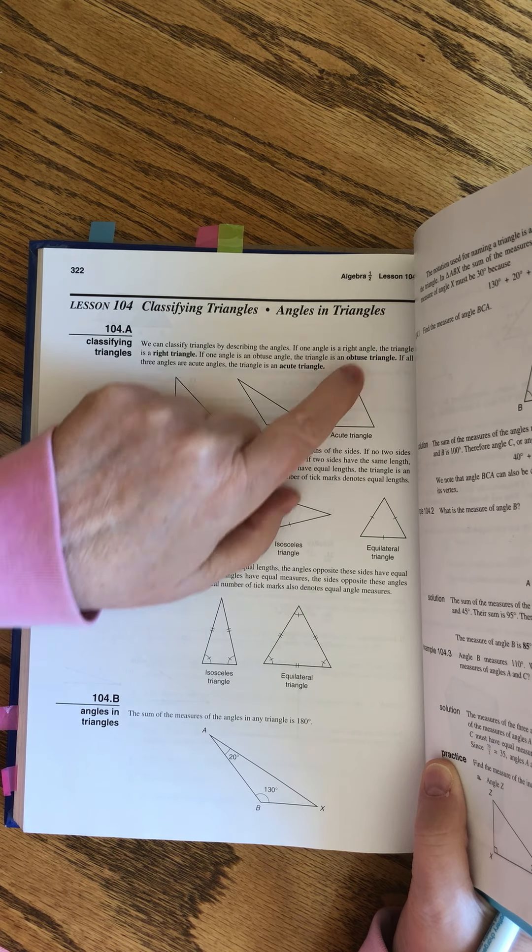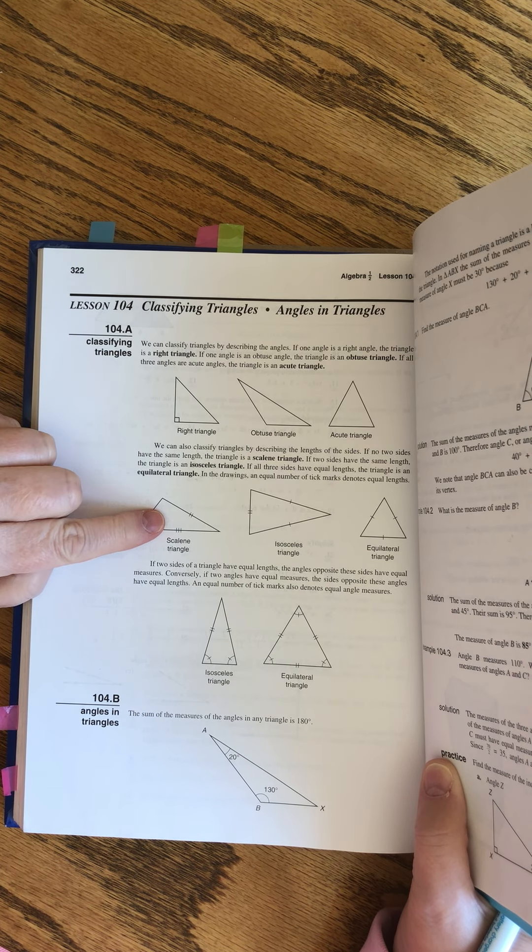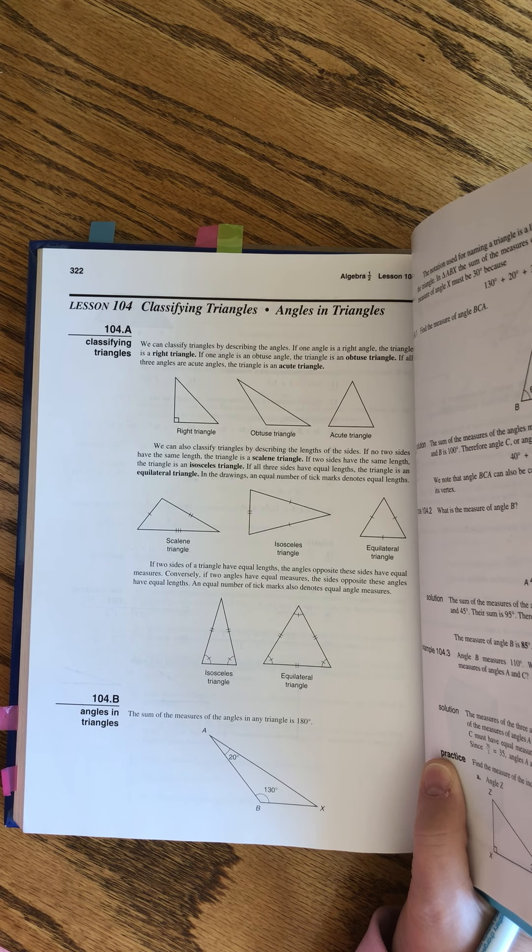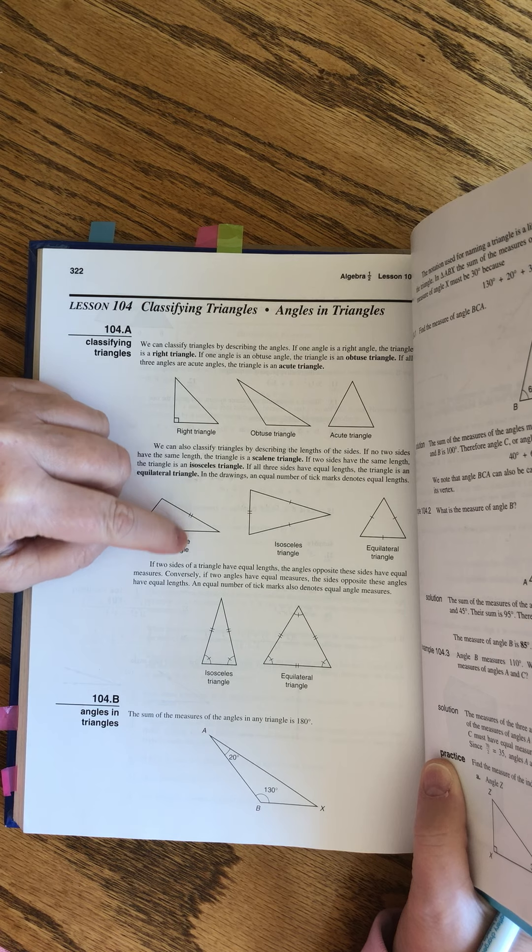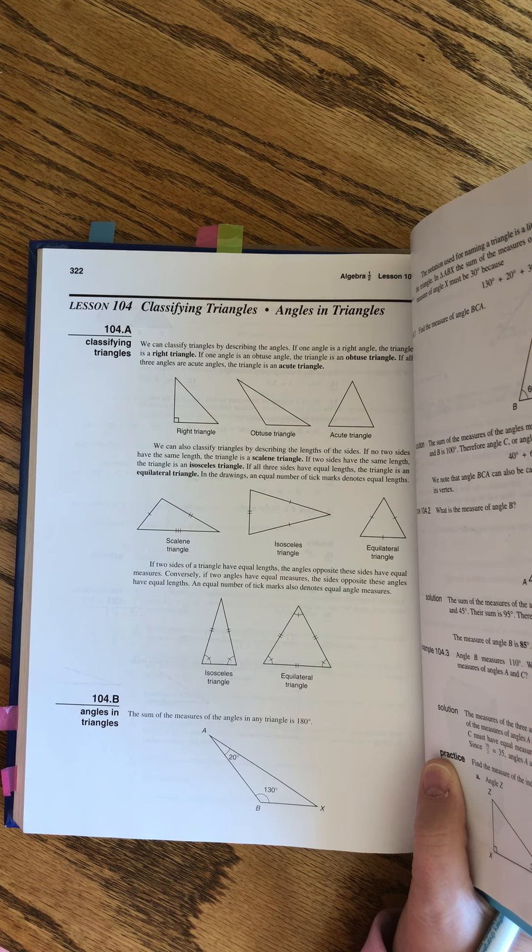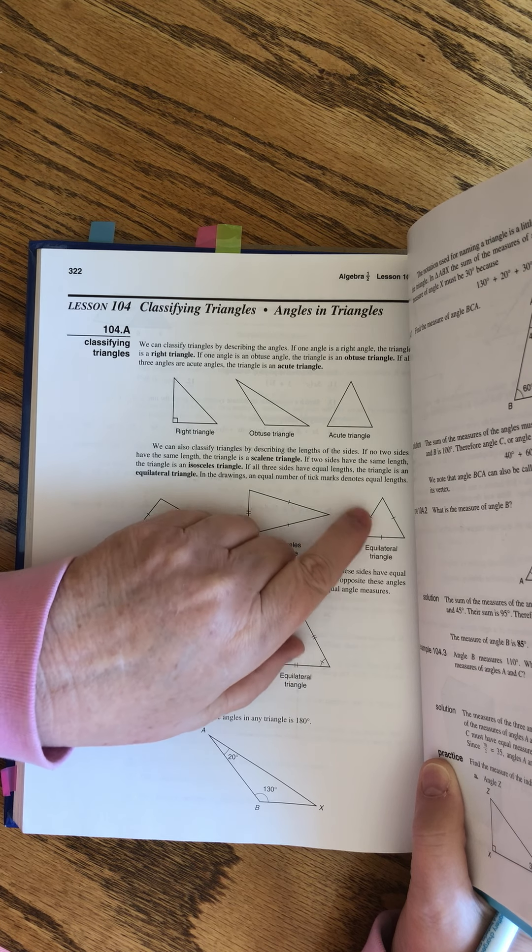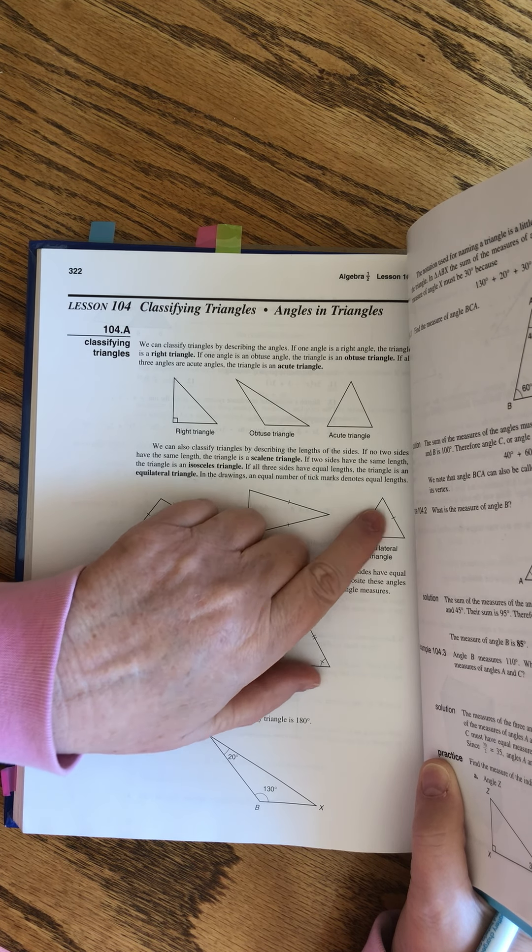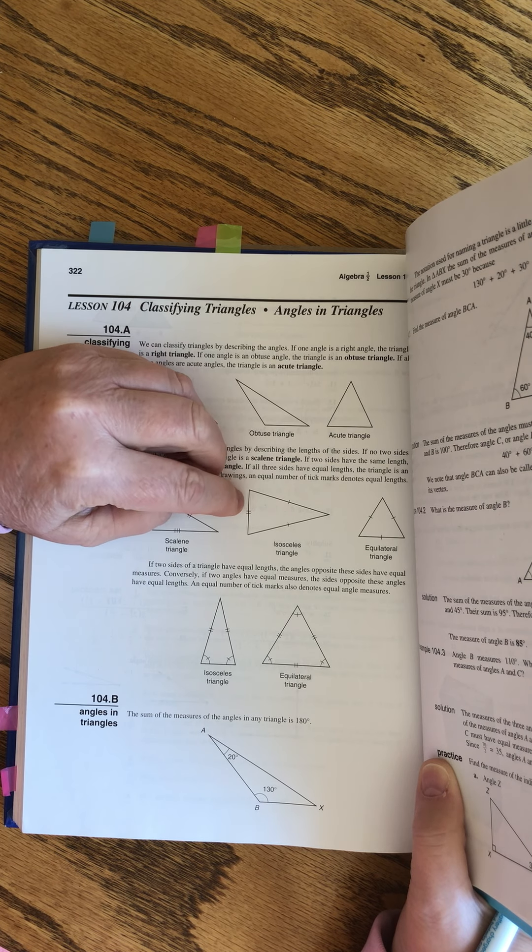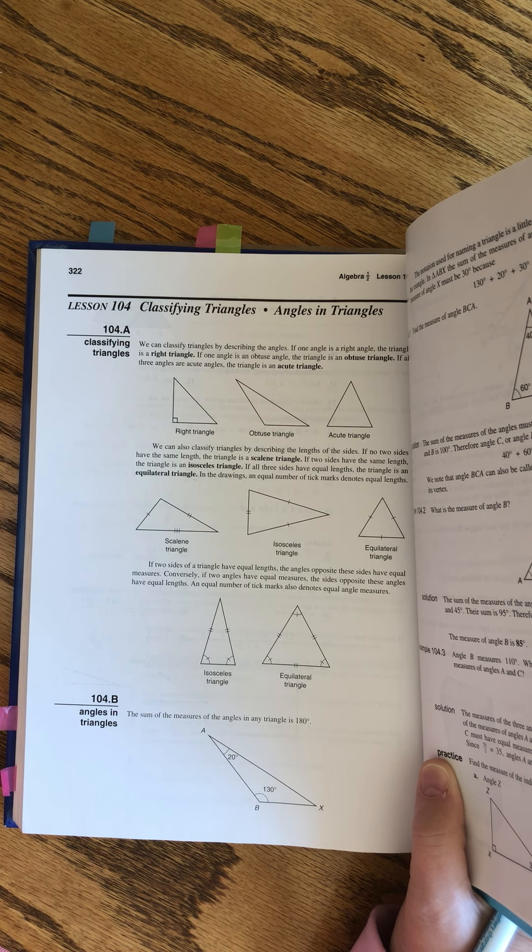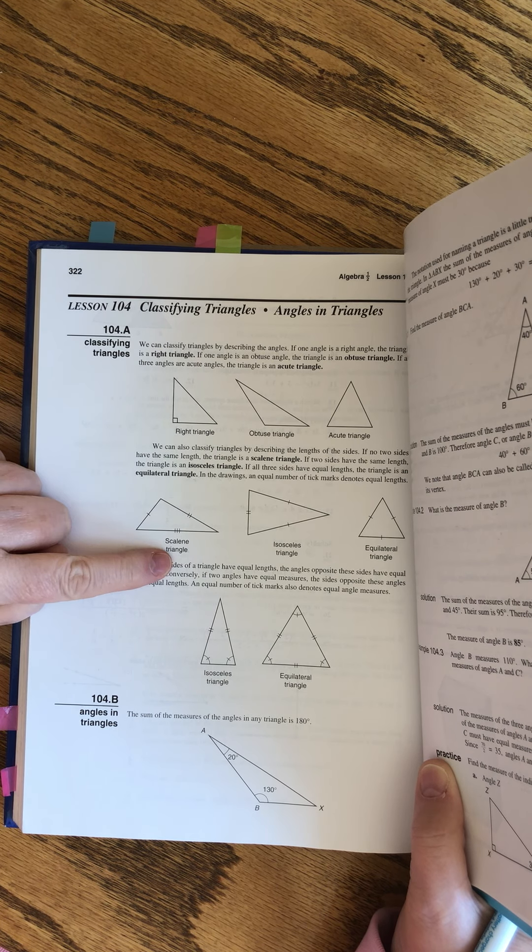This row of triangles is talking about not the size of the angles but the lengths of the sides. Notice we're using these little tick marks. Equilateral means equal sides - all three sides are exactly the same. Isosceles means two of the three are the same, and scalene means every length is different.